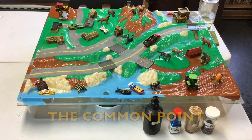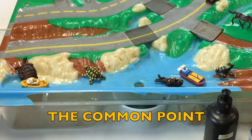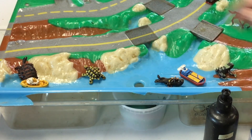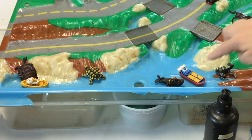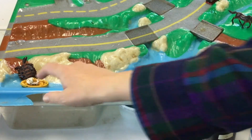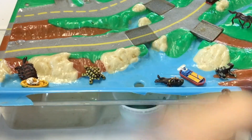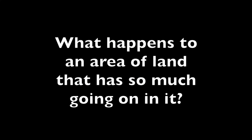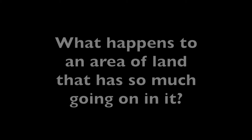Down in the common point, we've got a frog, otter, boat, boat, and two turtles. What happens to an area of land that has so much going on in it?